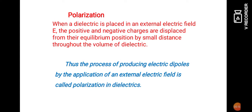Now let us see what is polarization in dielectrics. When a dielectric is placed in an external electric field E, the positive and negative charges are displaced from their equilibrium position by a small distance throughout the volume of the dielectric. Dielectric materials are nothing but insulators — they are not able to conduct electricity as well as heat.